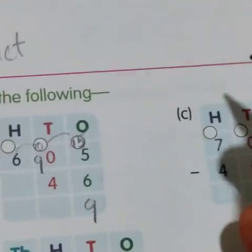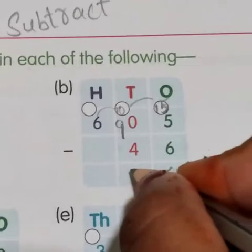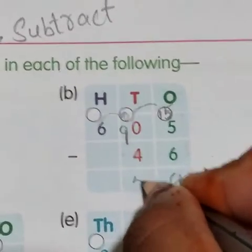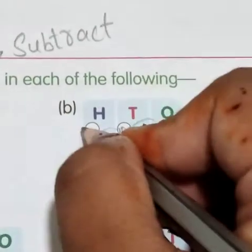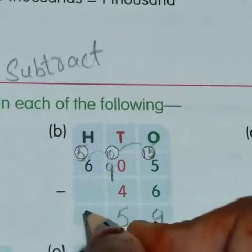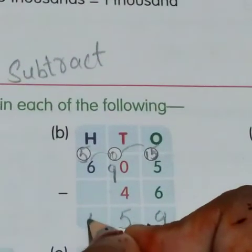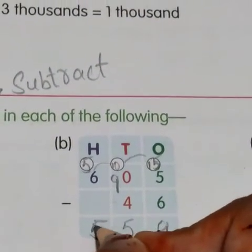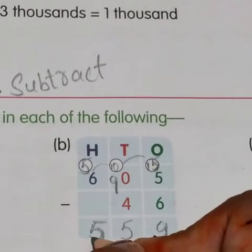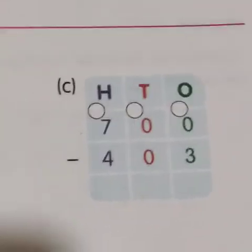9 minus 4 is 5. Now this will become 5, and there is no number left, so we keep 5 here as it is. That completes part B.